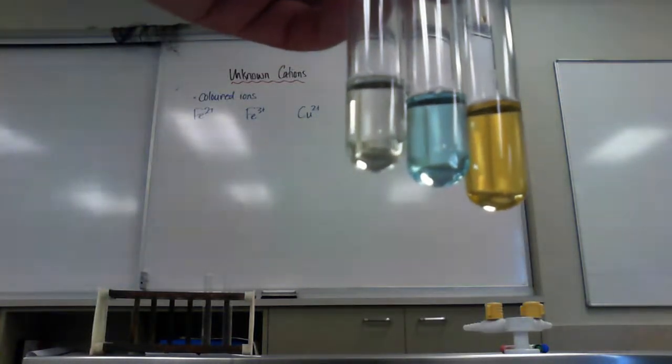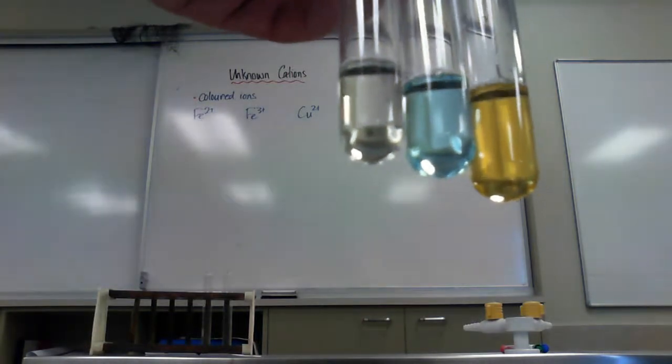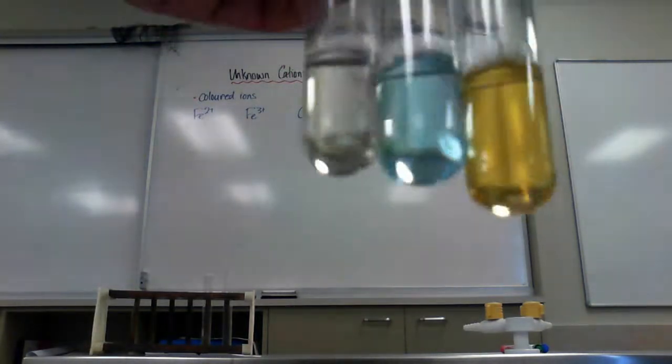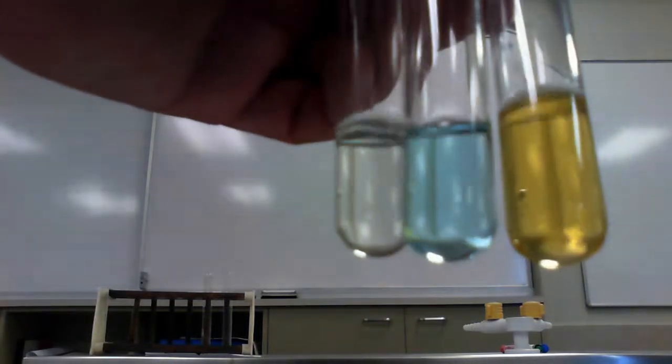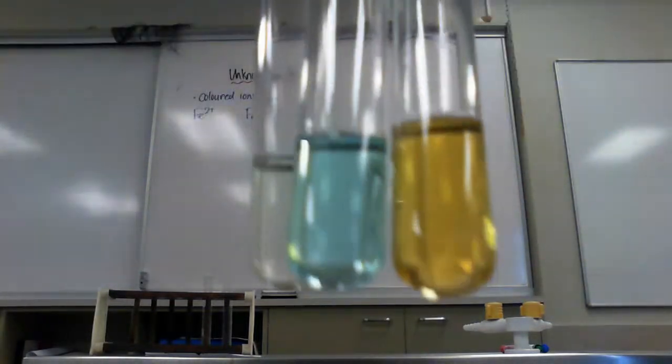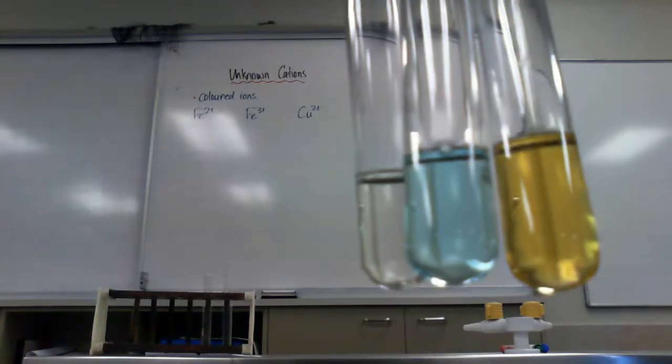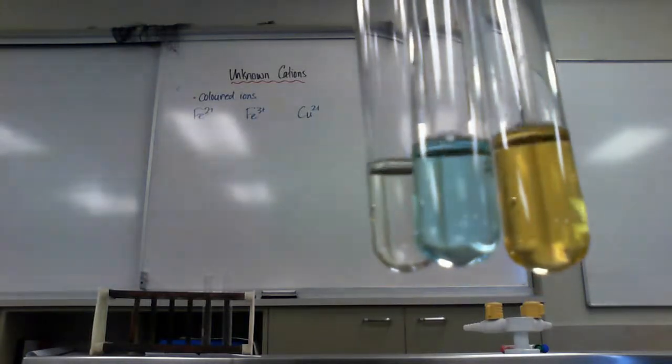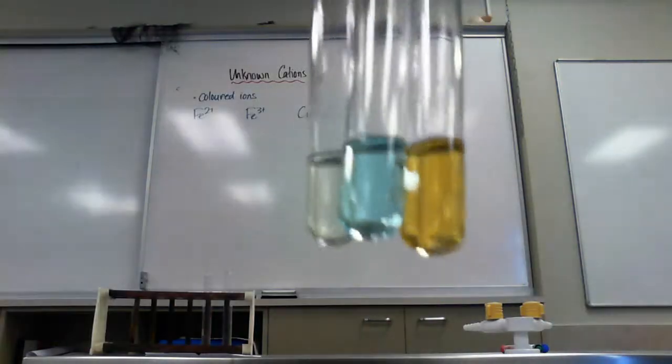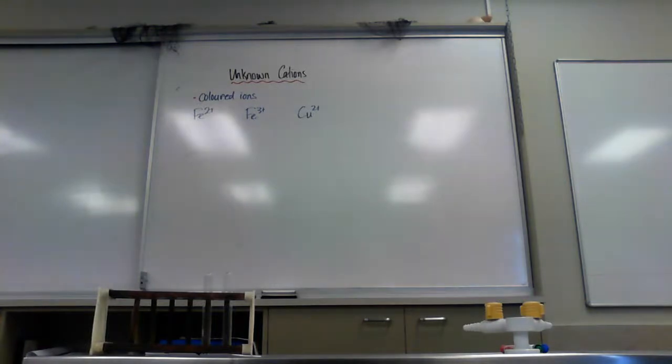On the far left is Fe2+, which, it may be hard to see, is a very very pale green. Then I've got Copper 2+, which is a blue color, and then that orangey yellowy sort of color of Iron 3+. However, we still do need to confirm that they are what we think they are because some anions have colors as well.